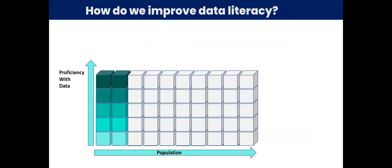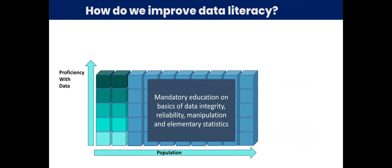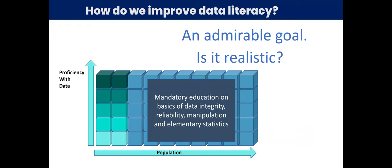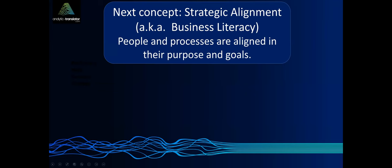So how do we improve data literacy right now? What I see most is encouragement to have mandatory education on the basics of data integrity, reliability, manipulation, and elementary statistics, which is an admirable goal. I have to ask whether it's realistic, if we are talking about the full population. So I'm going to take a detour. Hopefully you guys will tolerate a detour. And I'm going to talk about what's called strategic alignment.